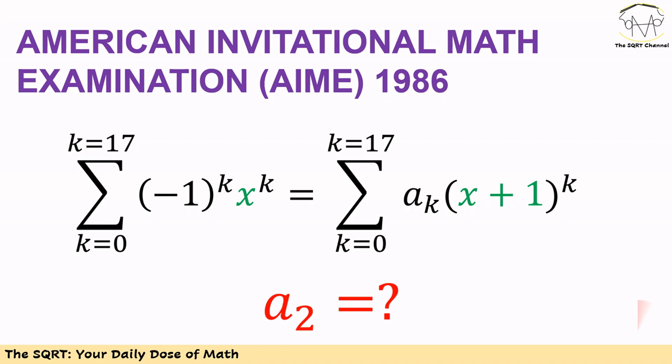In this problem we have a sigma of minus 1 to the power of k, x to the power of k, for k equals 0 to 17. We know that this sigma is going to be equal to another sigma which is based on x plus 1 to the power of k times a_k for the same k equals 0 to 17.